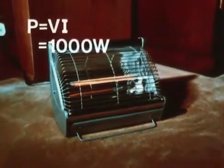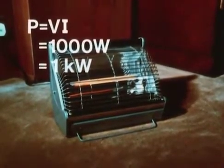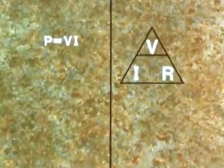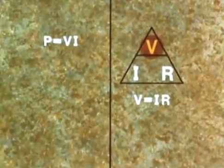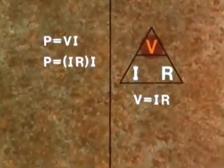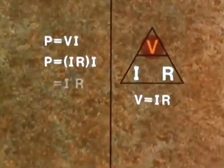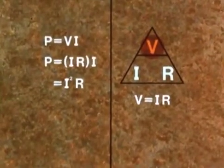There are other ways of expressing the power formula P equals VI. You remember the Ohm's law triangle, from which we can say that V equals IR. So if in the power formula we put V equal to IR, it simplifies to P equals I squared R.